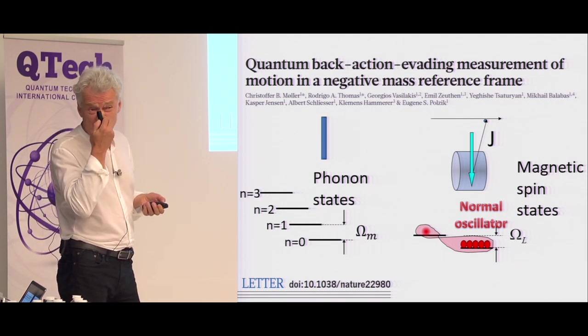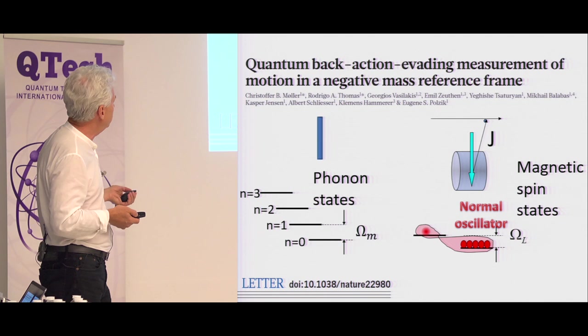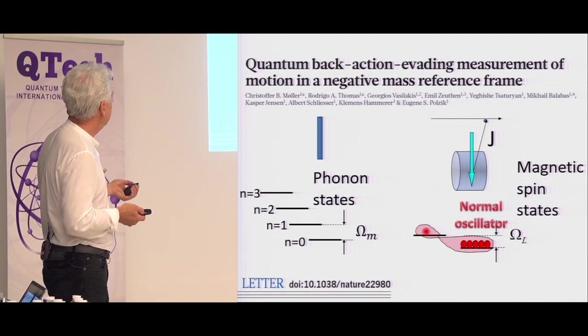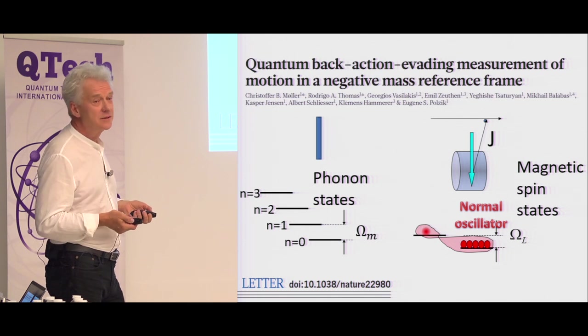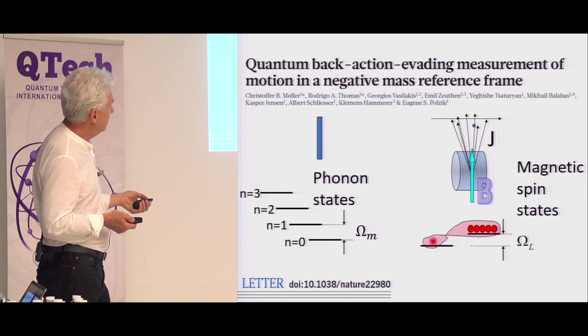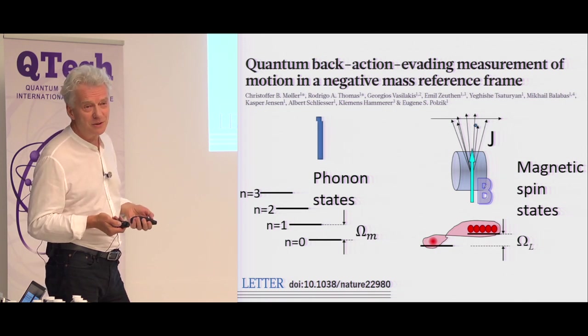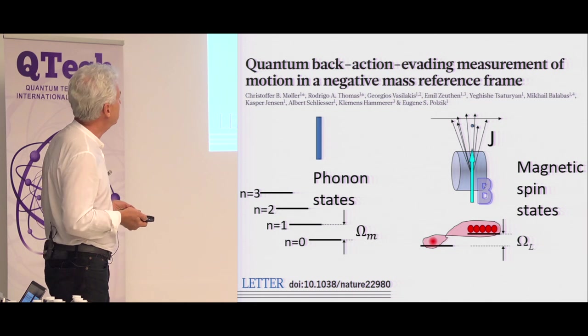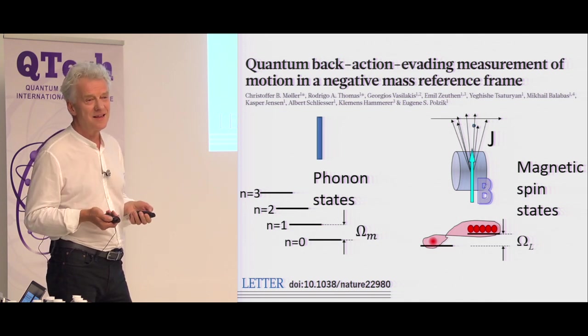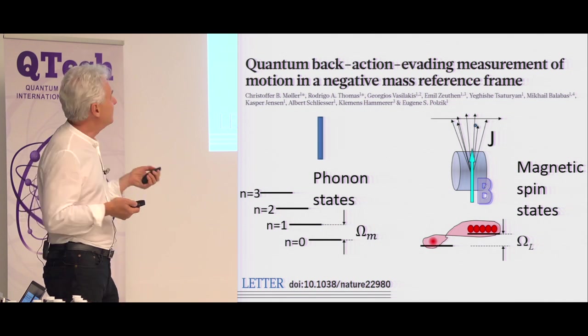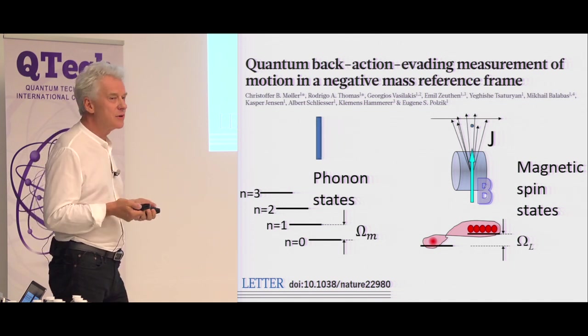And in this work from last year, we actually demonstrated that the principle works. So here is our mechanical oscillator. It oscillates. Let's assume that we initiate it in the ground state. And it's a normal oscillator. The higher is the excitation, the higher is the energy. And this is our magnetic oscillator. And if we orient it in a specific way, namely, along the magnetic field, then the first excited state will have the energy below the ground state. And that will be the negative mass or negative frequency oscillator. So the idea is essentially that you make a joint measurement on those two oscillators. And because it's a joint measurement, the effect of the quantum back action on those two systems can be canceled out. And you can create an entangled state.